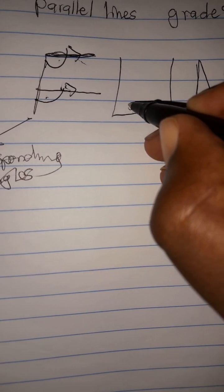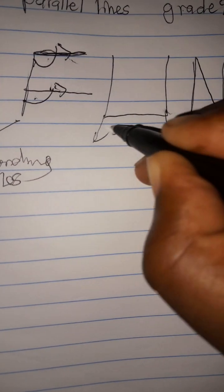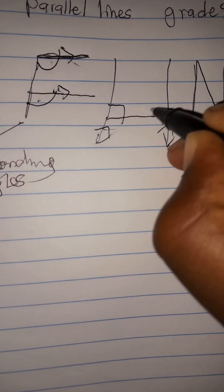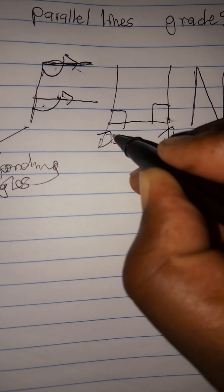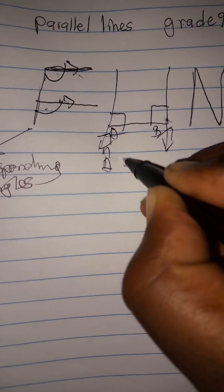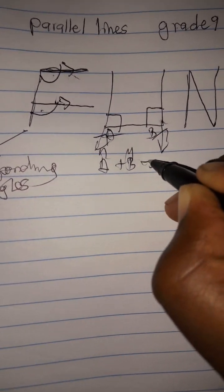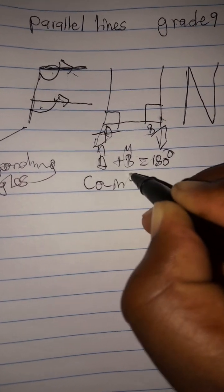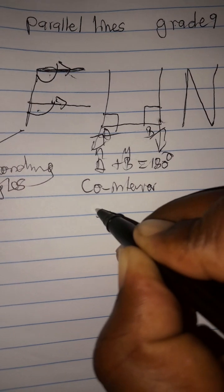Then we have co-interior angles. With co-interior, you may have parallel lines where these two angles add up to 180 degrees. Maybe if it was A and B, you would add angle A plus angle B to get 180 degrees. This is what we call co-interior angles.